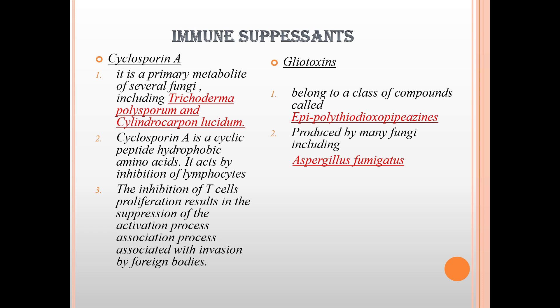Cyclosporine A is the primary metabolite of several fungi including Trichoderma polysporum and Cylindrocarpon lucidum. Cyclosporine is a cyclic peptide containing hydrophobic amino acids. It acts by inhibition of lymphocytes — the inhibition of T cell proliferation results in the suppression of the activation process associated with rejection of foreign bodies.